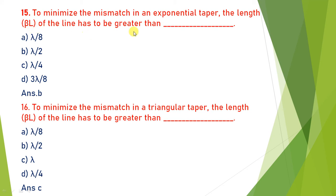Next: to minimize mismatch in an exponential taper, the electrical length βl must be greater than what? For an exponential taper, βl must always be greater than or equal to 2π. With β = 2π/λ, this means l must be greater than λ/2. So the answer is (b): βl > λ/2.